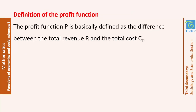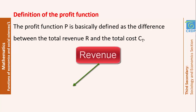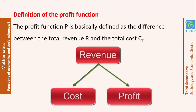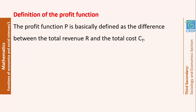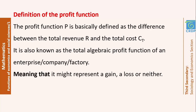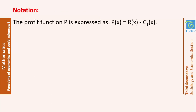Now we will start with the profit. The profit function represents what the enterprise gains from selling items — not the entire amount received, because part of that money covers production expenses. The extra money represents the profit. The profit function is the difference between the total revenue function and the total cost: P(x) equals R(x) minus CT(x). It is also called the total algebraic profit because it can represent a gain if positive, a loss if negative, or neither if zero.